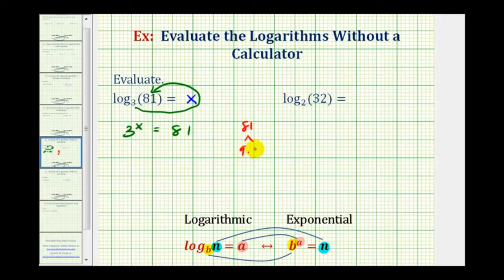81 is equal to 9 times 9, and 9 is equal to 3 times 3. So 81 is equal to 3 to the 4th. So now we have 3 to the x equals 3 to the 4th. So these two are equal, and the bases are the same, and therefore the exponents must be equal, meaning x must equal 4.